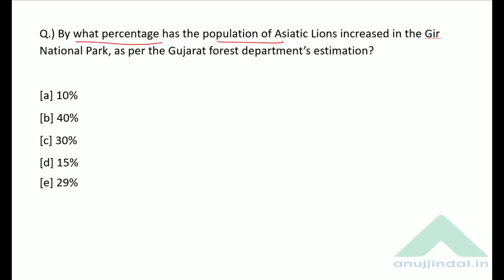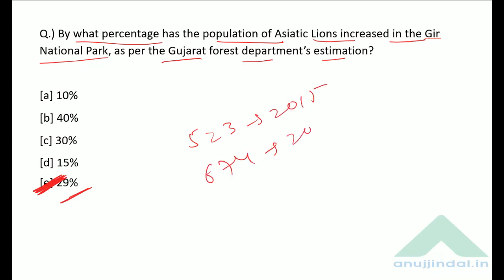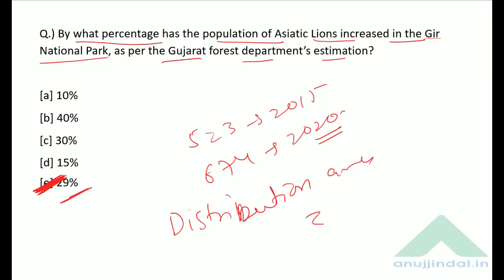By what percentage has the population of Asiatic lions increased in the Gir National Park as per the Gujarat Forest Department's estimation? According to the count, there is an increase of 29% — from 523 in 2015 to 674 in 2020. Additionally, the distribution area has also increased by 36%.